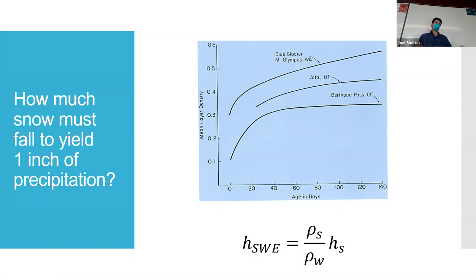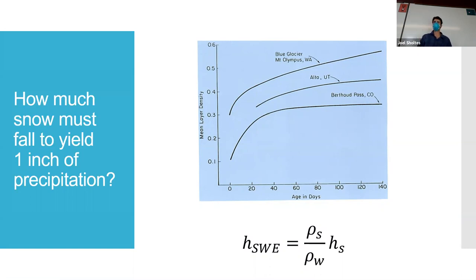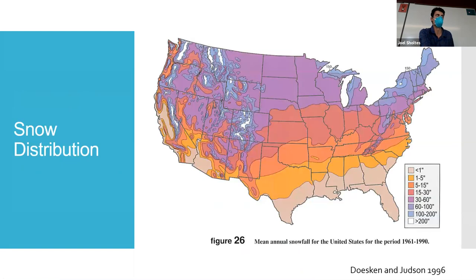How much snow do you need to fall to get one inch of precipitation? About a foot of snow — and that's actually just about right. That varies quite a bit depending on the snow type, but it's a good rule of thumb.